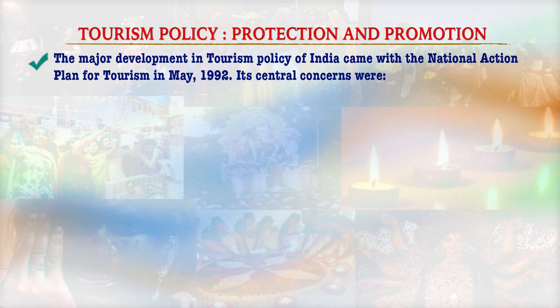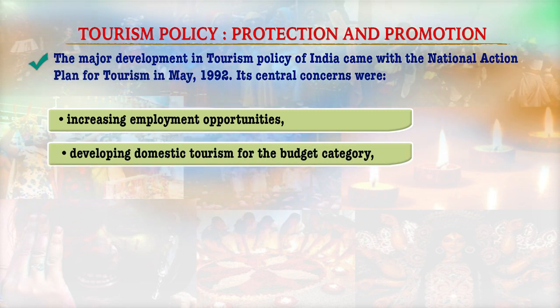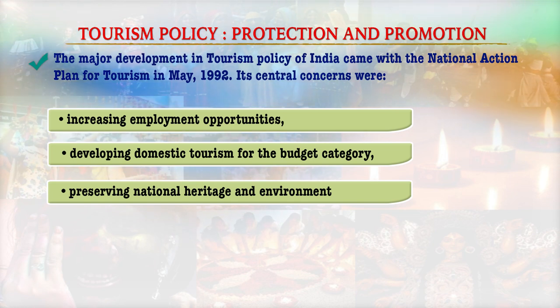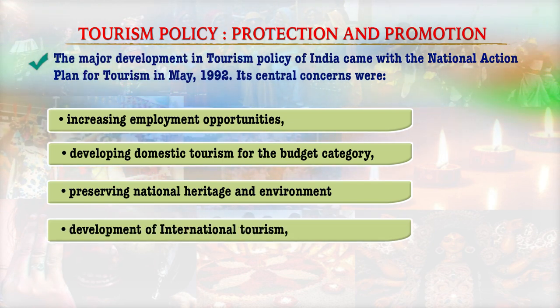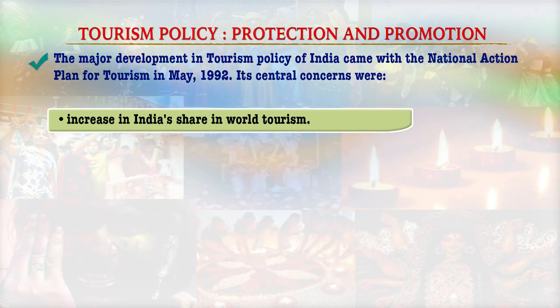The central concerns of the National Action Plan for Tourism 1992 were: socio-economic development of areas; increasing employment opportunities through developing tourism products; developing domestic tourism for budget category; preserving national heritage and environment; developing India as an international tourist destination; diversification of tourism products; and increasing India's share in world tourism.